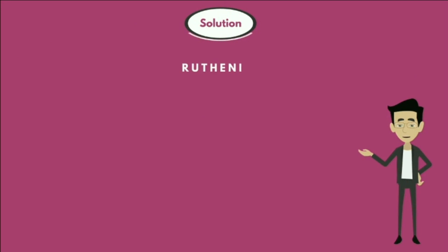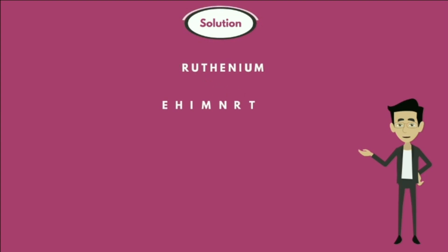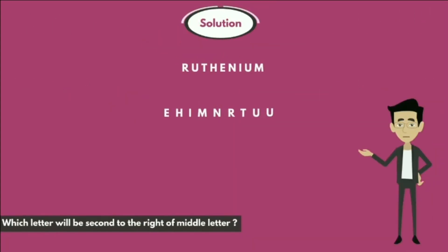The given word is R-U-T-H-E-N-I-U-M. If we rearrange the letters in alphabetical order, the word becomes: E-H-I-M-N-R-T-U-U. Now, the question asks which letter will be second to the right of the middle letter.